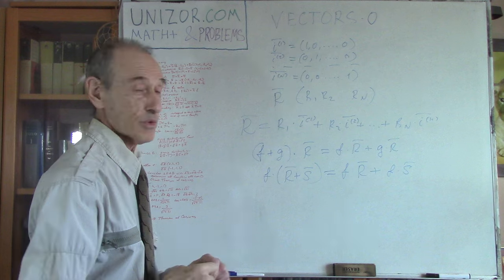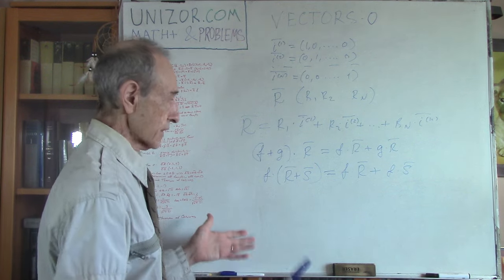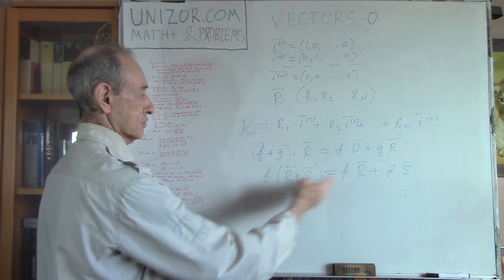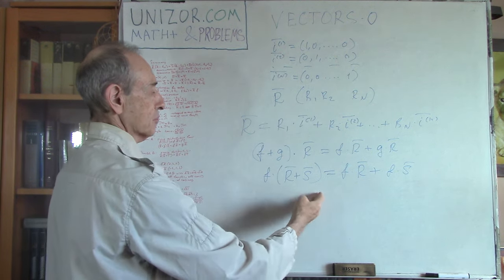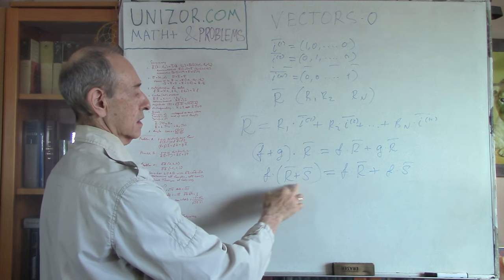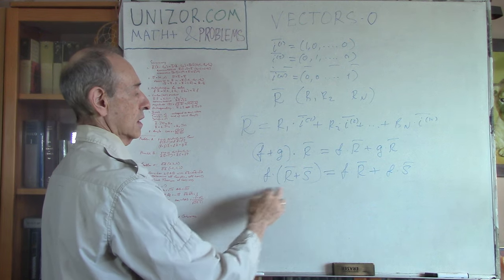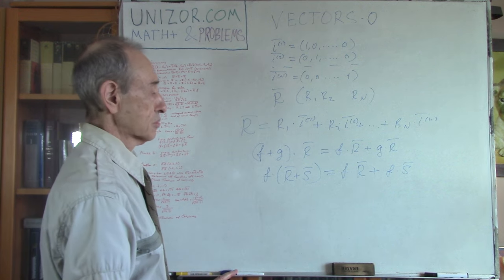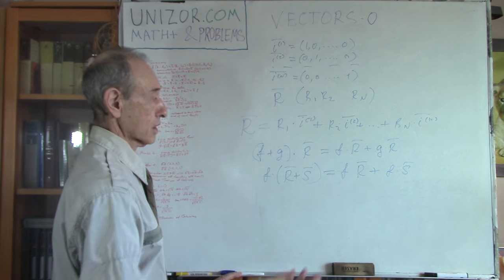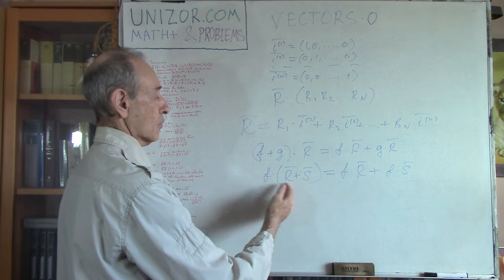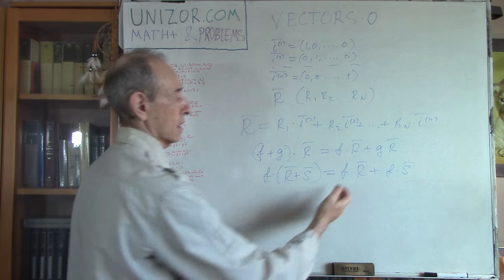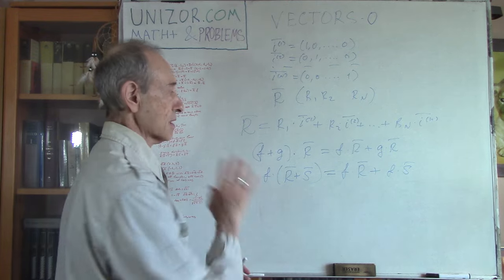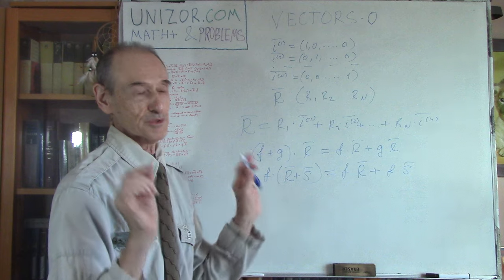The second distributive law — Problem B — is that F·(R+S) = F·R + F·S. The proof is the same: the first component of (R+S) is r1+s1, and F·(r1+s1) = F·r1 + F·s1 by the distributive law for real numbers, and that's exactly what you get on the right side. So the distributive law works here as well — very easy.